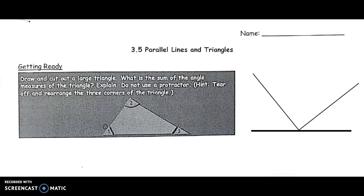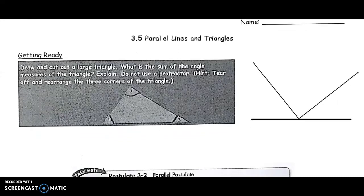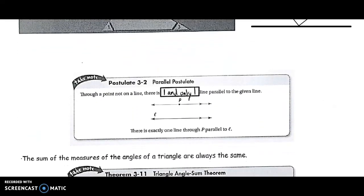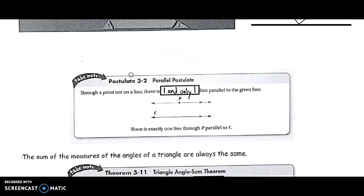If I rearrange those three angles of a triangle, I could arrange them in a certain order so that they all add up to form a straight line, and that should show us something about the measure of all three of a triangle's angles. First, before we deal with triangles, we're talking about parallel lines.